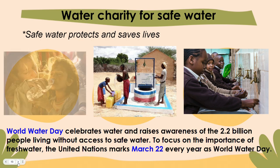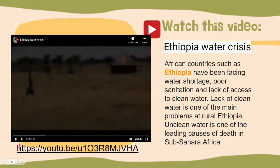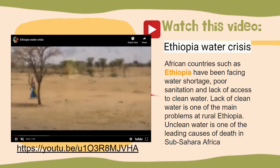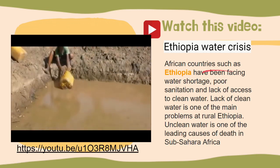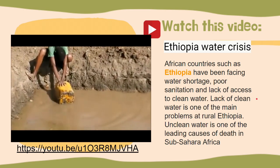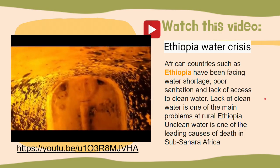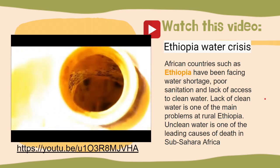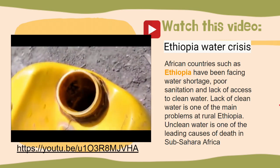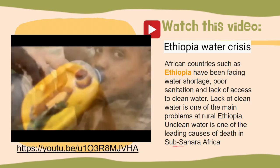Watch this video about the Ethiopia water crisis. African countries such as Ethiopia have been facing water shortage, poor sanitation, and lack of access to clean water. Lack of clean water is one of the main problems in rural Ethiopia because unclean water is one of the leading causes of death in their country.